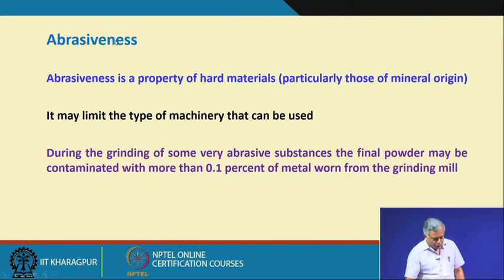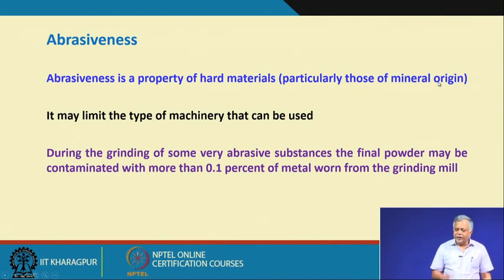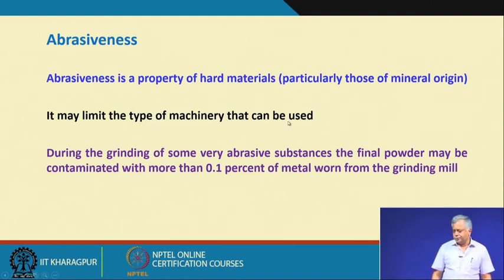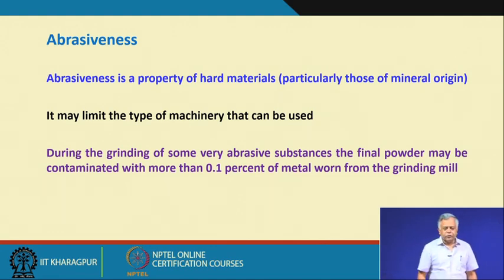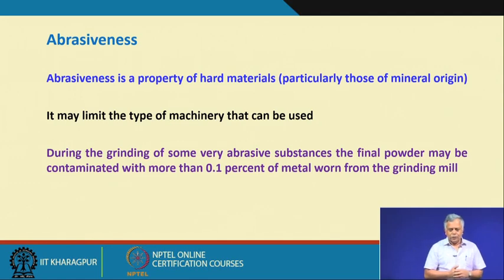Abrasiveness is a property of hard materials, particularly those of mineral origin. If the material is abrasive, it may limit the type of machinery that can be used because of wear on the material surface through which we are trying to break the material. Maintenance-related issues and capital investment on equipment must be carefully considered. If the material is abrasive, we must take precautions while selecting equipment — whether it can reduce sizes even though the material is abrasive.